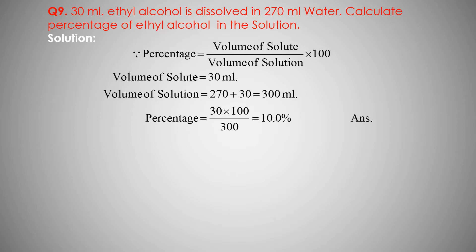Volume of solution equals mass of solvent plus mass of solute. Mass of solvent — water — is 270 milliliter, plus mass of solute — ethyl alcohol — is 30 milliliter. 270 plus 30 equals 300 milliliter. So volume of solution is 300 milliliter and volume of solute is 30 milliliter.